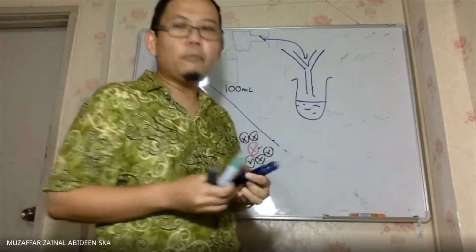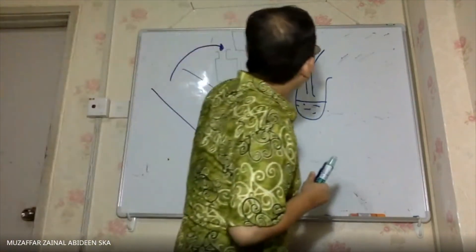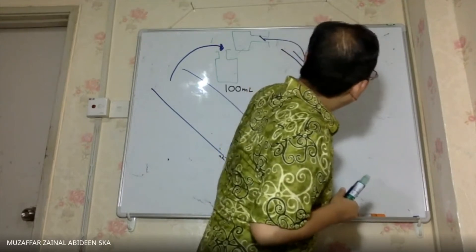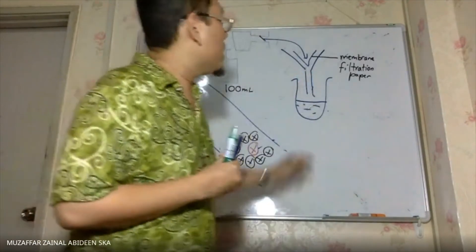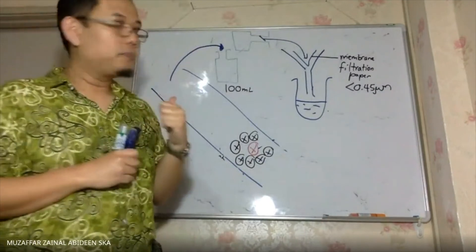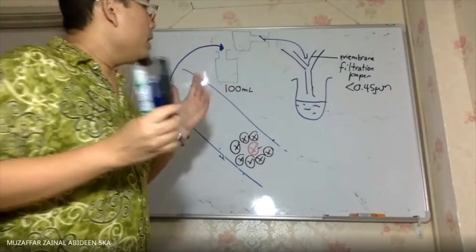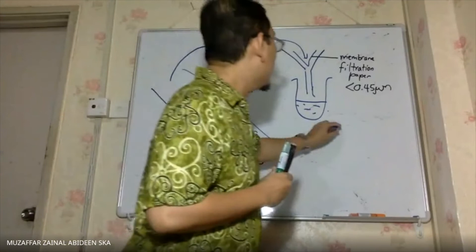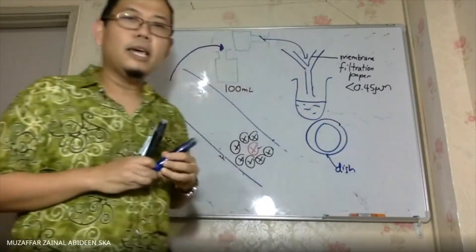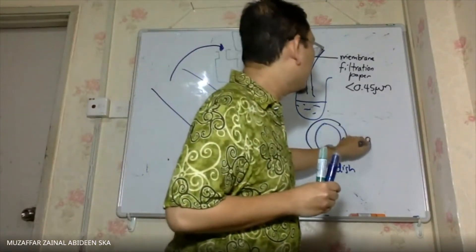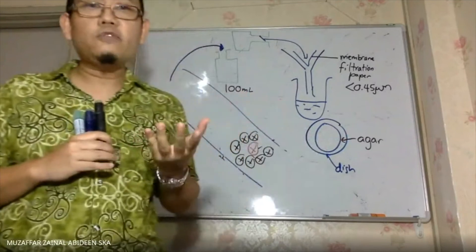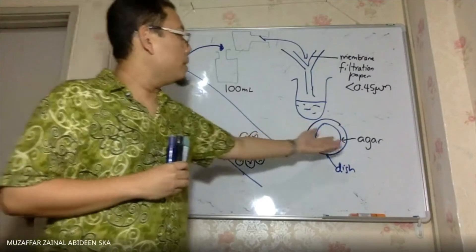The membrane filtration paper has a pore size of less than 0.45 micrometers. After filtering the sample, you take the wet membrane paper and place it into a dish. The dish contains agar, which provides nutrients for the bacteria to grow.